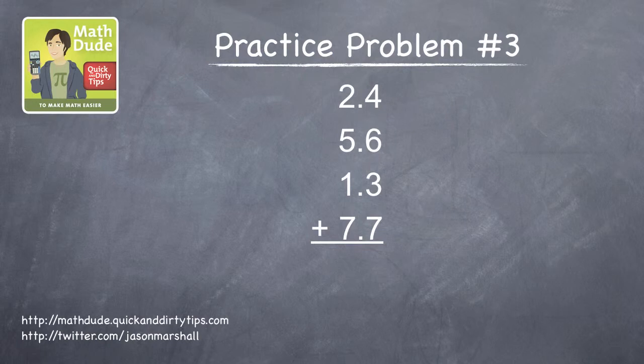Finally, in the third practice problem, we have a bunch of numbers that have both whole number and decimal parts. Let's start by using the second of our two quick calculating tips, adding from left to right instead of from right to left.